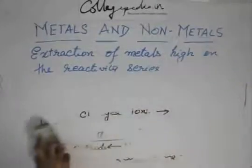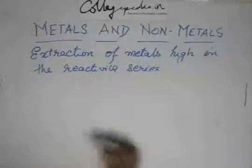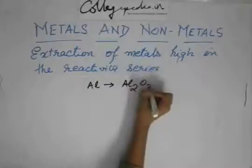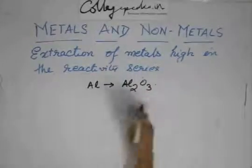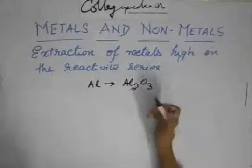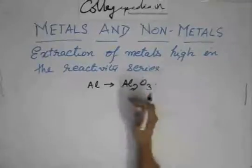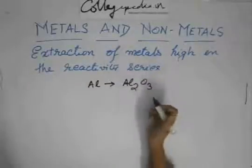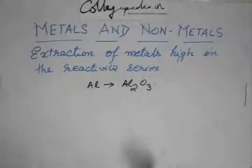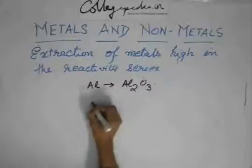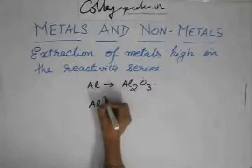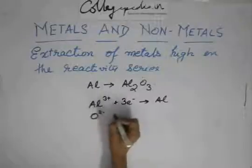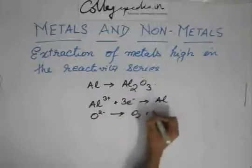It may not be chloride always. In the case of sodium, it is sodium chloride. But aluminium oxide is found easily because it is very hard to find aluminium chloride in free state. So we have to extract aluminium from aluminium oxide. We do electrolysis of aluminium oxide, and it has the same procedure — just the equations are different. That is: Al³⁺ + 3e⁻ → Al, and O²⁻ → O₂ + 2e⁻.